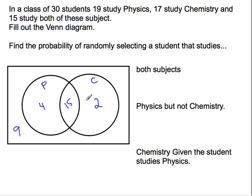All right, so probability of a student taking both subjects. So that's probability of both would be 15 out of 30 kids, so exactly a half. Probability of physics, but not chemistry. So there's only 4 people that are taking only physics, out of the 30 people.